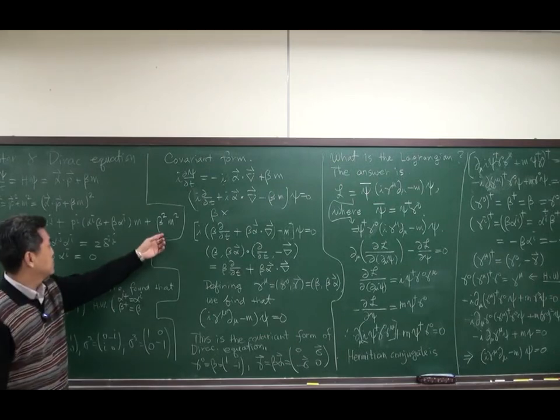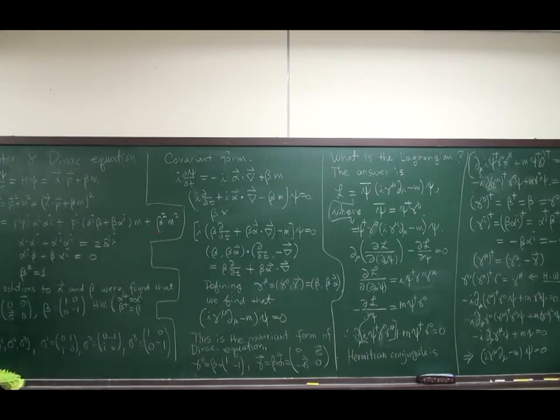And beta squared must give identity. So that constraint gives the minimal matrix such that alpha i equals sigma matrix in the off-diagonal term. And beta is 1 minus 1, 4 by 4 matrix. It is easy to find that from this matrix directly, you can show that alpha i and beta, both of them are Hermitian.